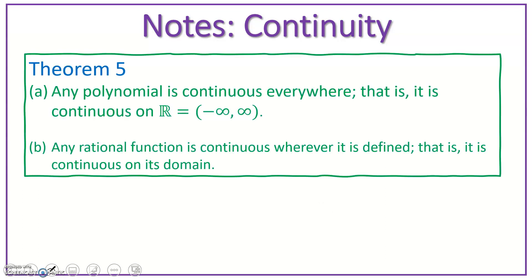And then Theorem 5, part A: any polynomial function is continuous everywhere — that is, it is continuous on all reals, negative infinity to infinity. And then any rational function is continuous wherever it is defined — that is, it is continuous on its domain.